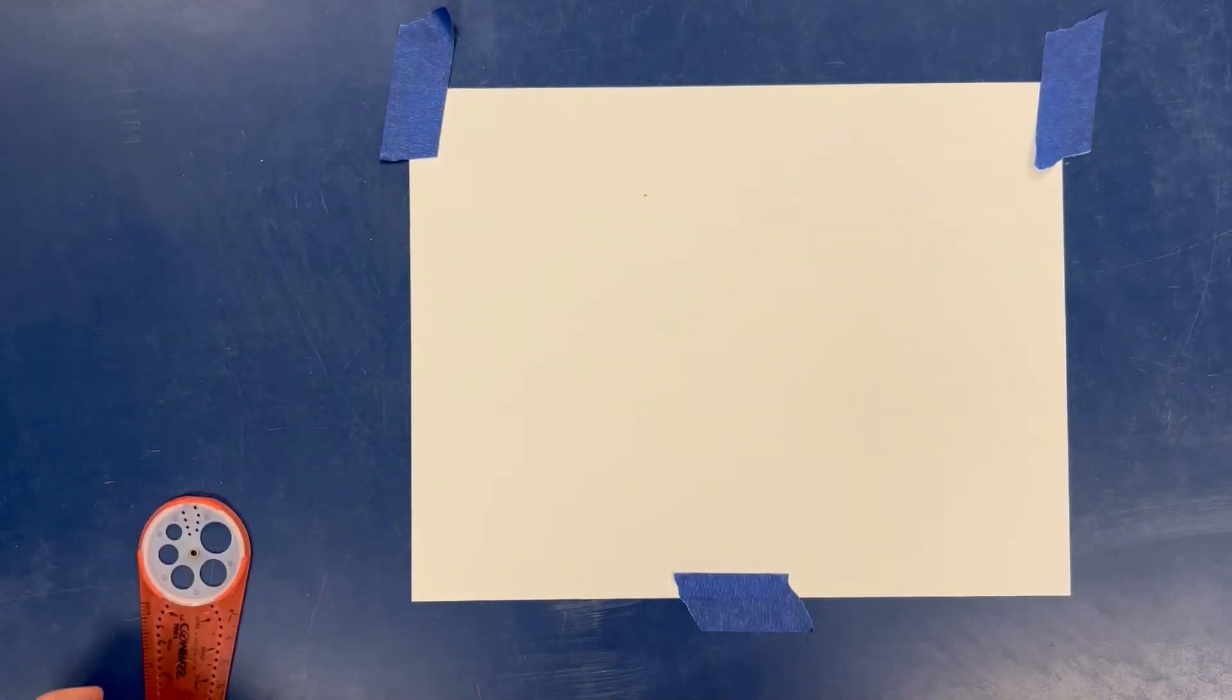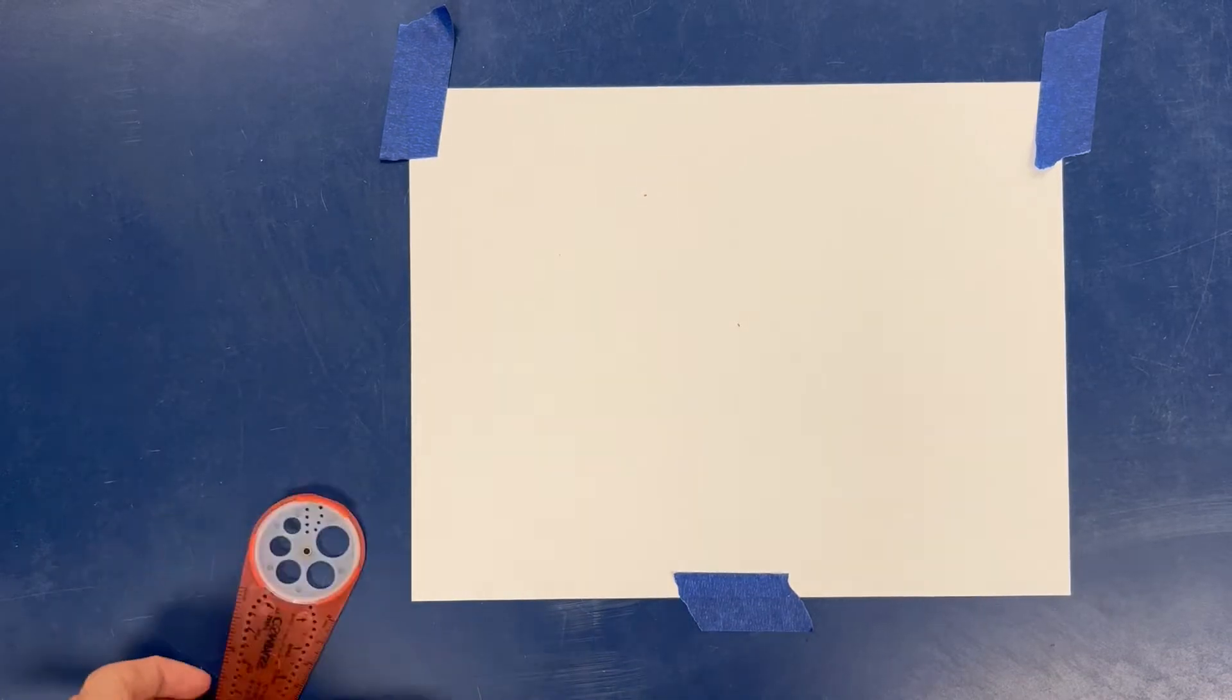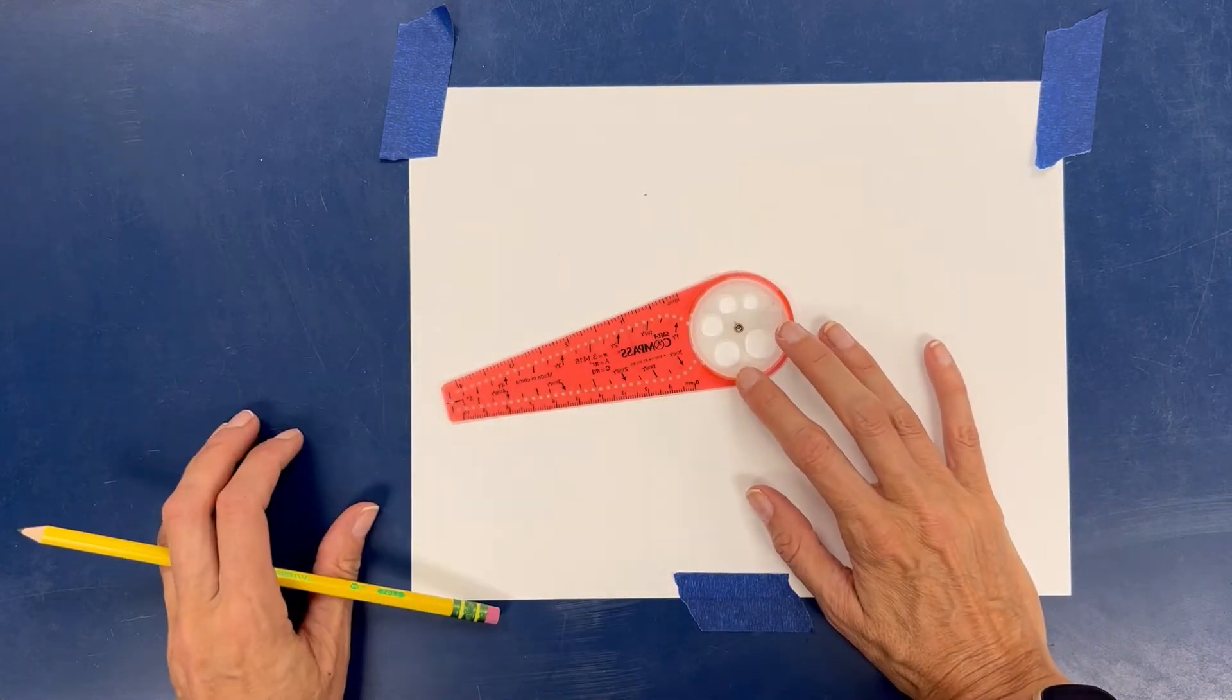Next I'm going to find the middle of our paper approximately. For me it's right about there. So I'm going to make a little dot right there. You probably can't see it. I'm going to make it big so you can see it. But really in real life don't make it big. We don't want to see that dot at all. This is just a guide mark for us.